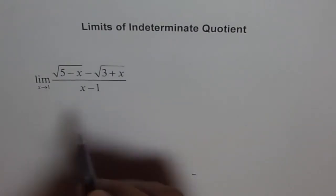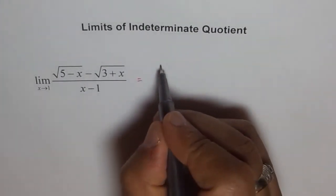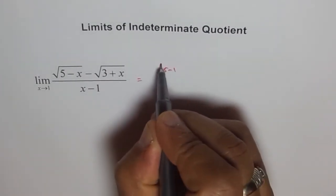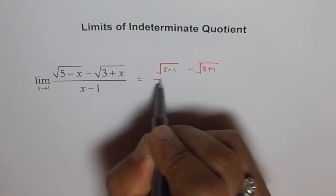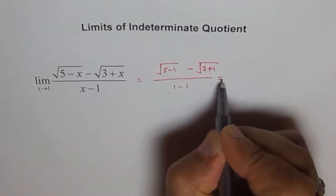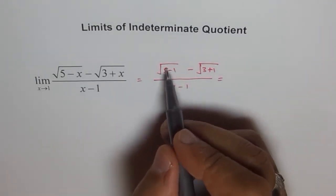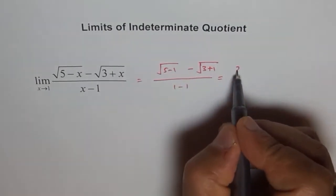If I substitute 1 here, I get square root of 5 minus 1 minus square root of 3 plus 1 over 1 minus 1. So 5 minus 1 is 4 and 4 square root is 2. So we get 2 here, right?